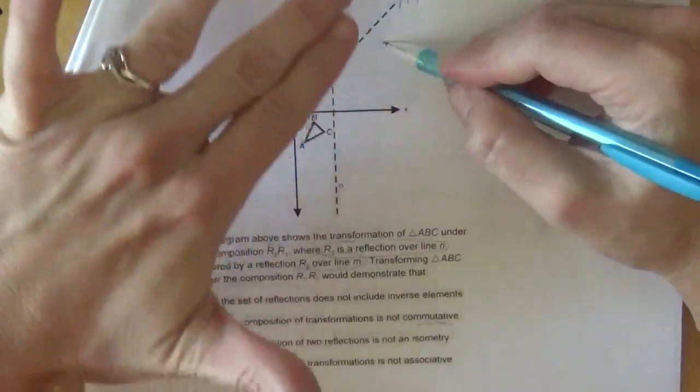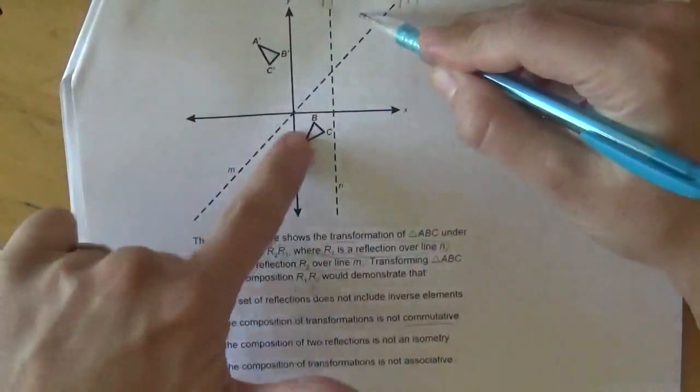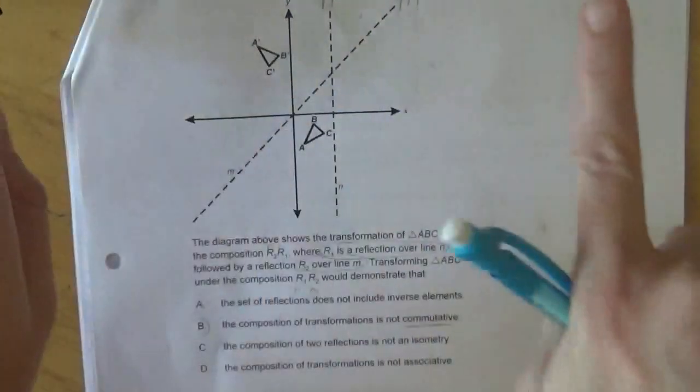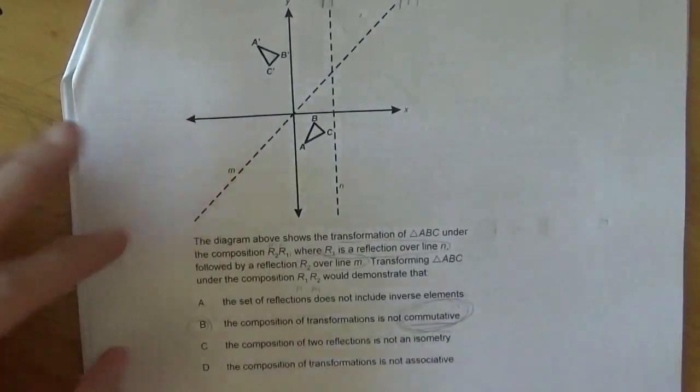I don't have to be too exact, because if I reflect that over M, it ends up up here, which is definitely not down there. And so since I'm not getting the same thing, the order in which I reflect is not commutative. So we're still getting B.